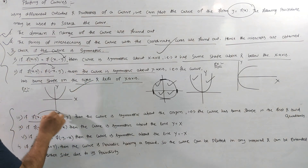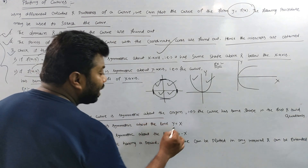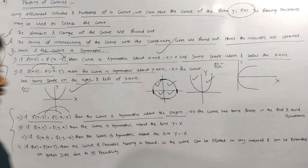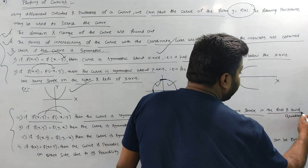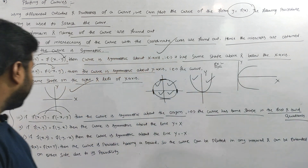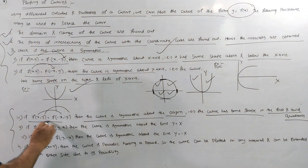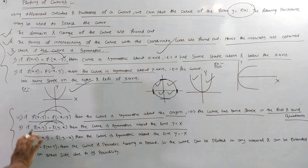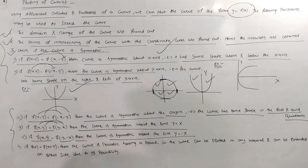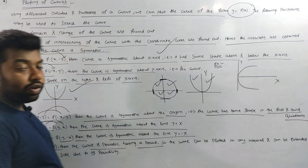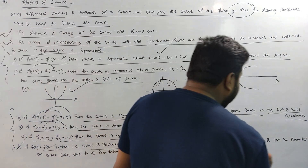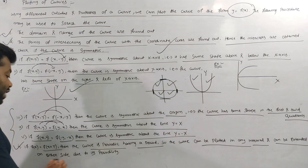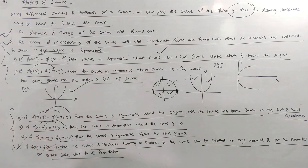If f(x, y) = f(-x, -y), then the curve is symmetrical about the origin. The curve has the same shape in the first and third quadrant. If f(x, y) = f(y, x), then the curve is symmetrical about the line y = x. If f(x, y) = f(-y, -x), then the curve is symmetrical about that line. If f(x) = f(x + t), then the curve is periodic with period t, and the curve can be plotted at any interval and expanded on either side of the periodicity.